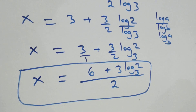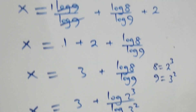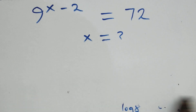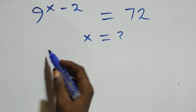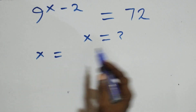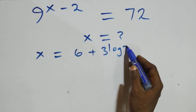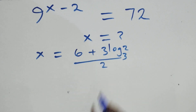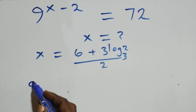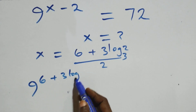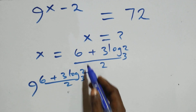Now let's check if this satisfies the problem. We substitute the value x = (6 + 3·log₃ 2) / 2. What we have becomes 9 raised to power (6 + 3·log₃ 2)/2, minus 2, is equal to 72.